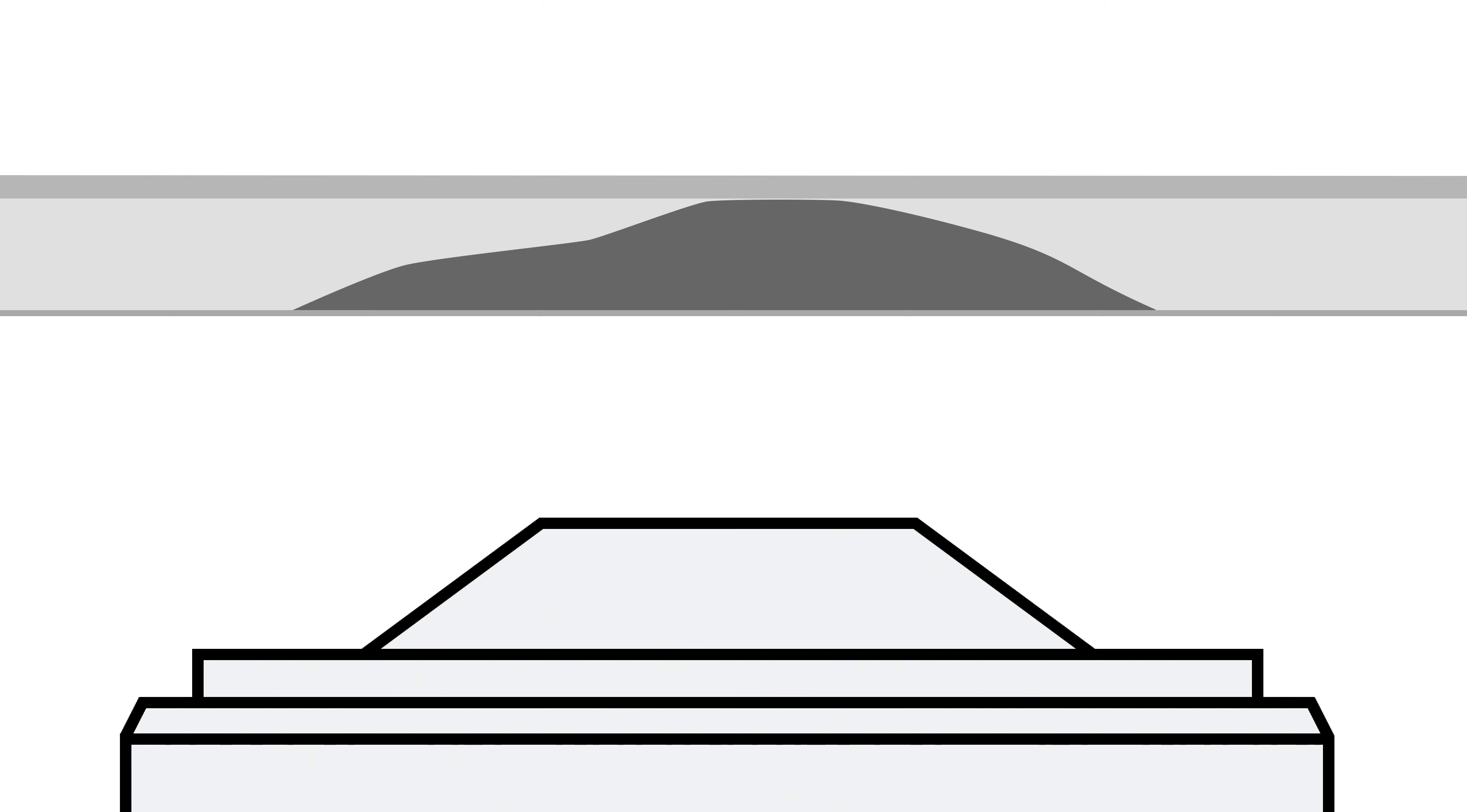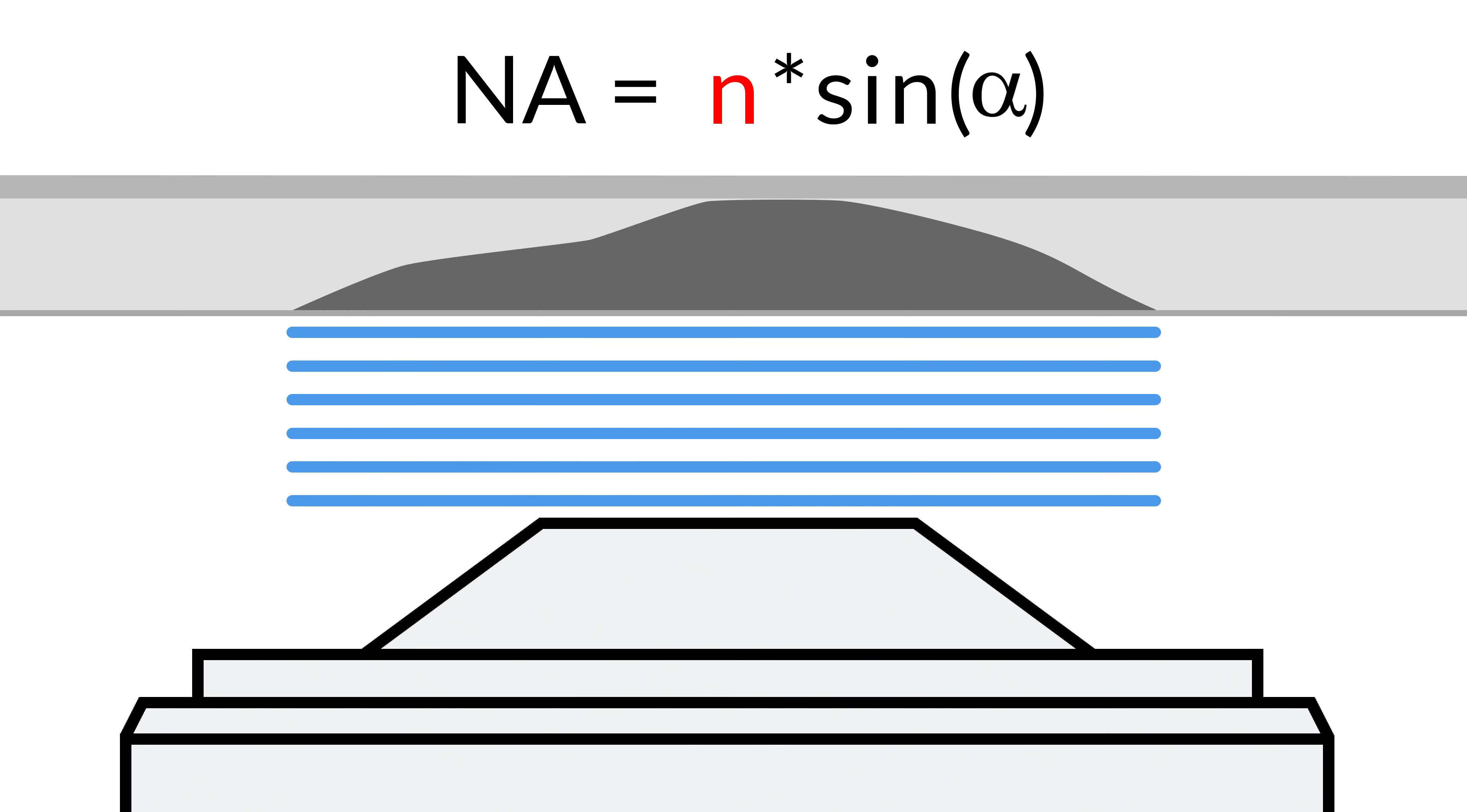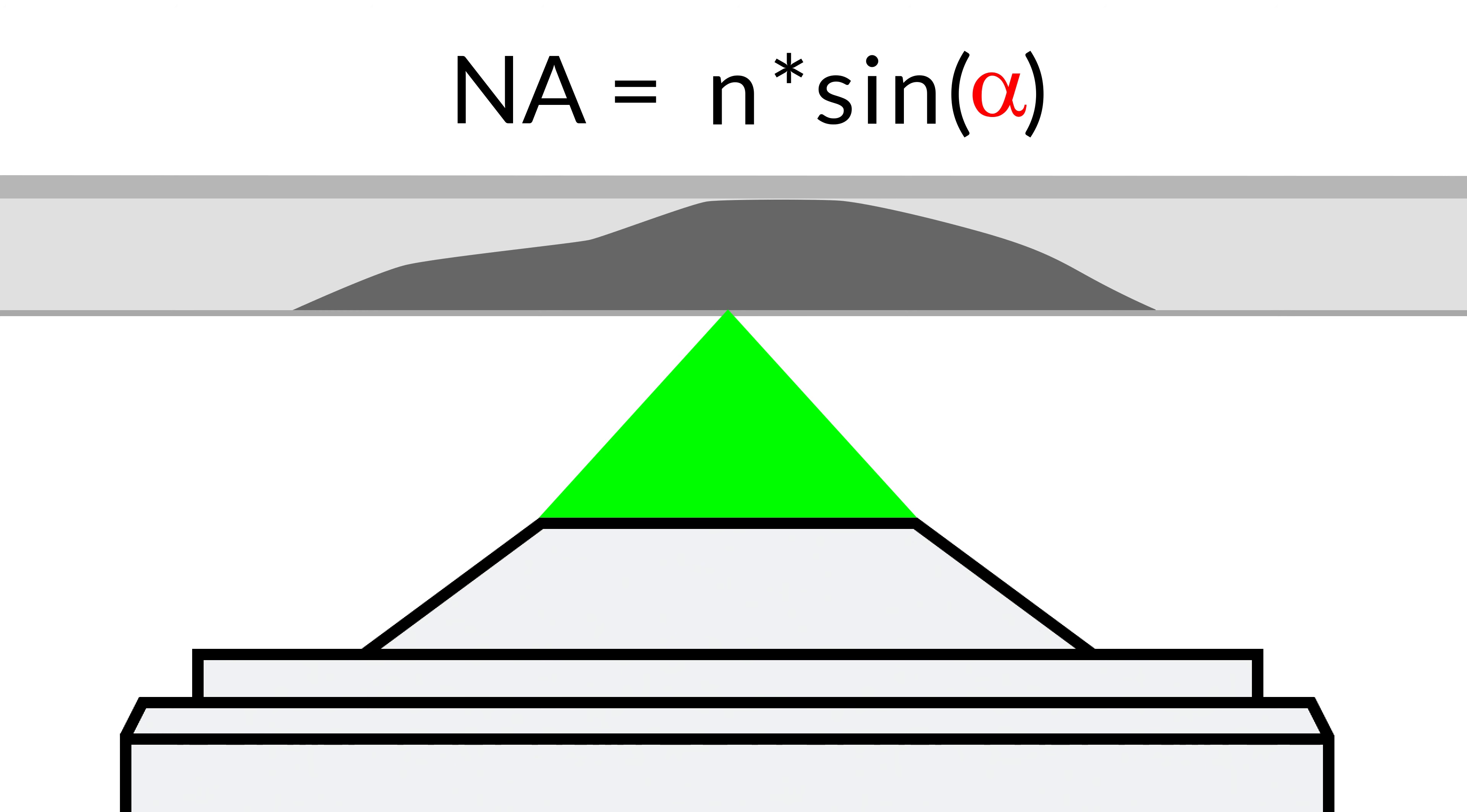The NA of our objective is calculated by n times the sine of alpha, where n is the refractive index of the medium between the coverslip and the front lens of the objective, and alpha is the sine of the half angle of the cone of light collected by the lens.